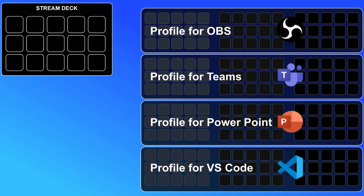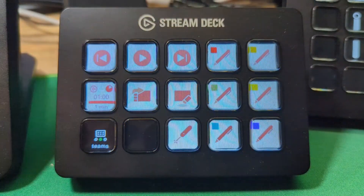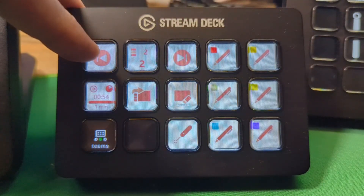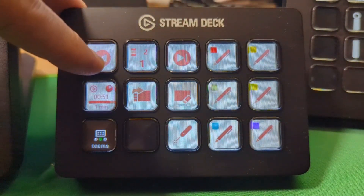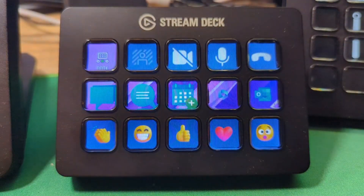When you combine folders, pages, and profiles, you've got a setup that allows you to manage hundreds or even thousands of actions without feeling overwhelmed, and you will always get the actions you require for the application you're currently running. For instance, if I'm presenting in a Teams video call, I've got a profile for Teams with all the actions I need to interact with my audience. In addition, I set up a PowerPoint profile to remote-control my presentation, and if I need to launch something on the side, I can for example launch my notes app via Stream Deck.